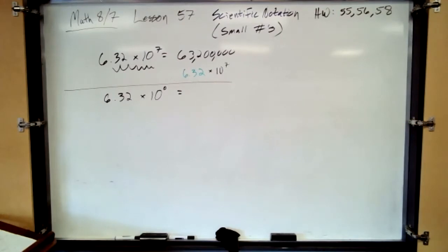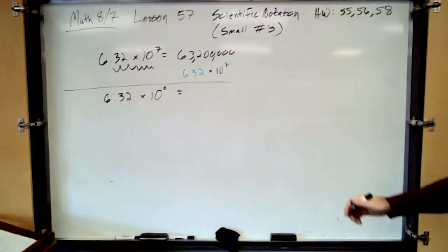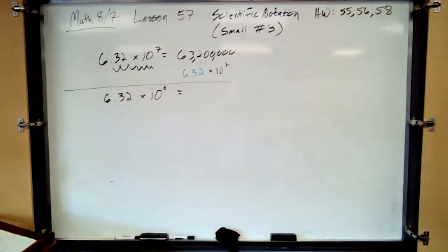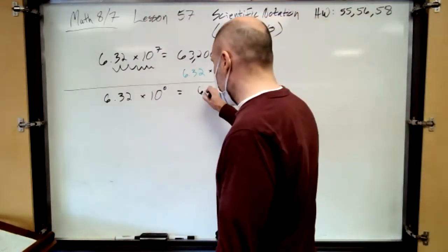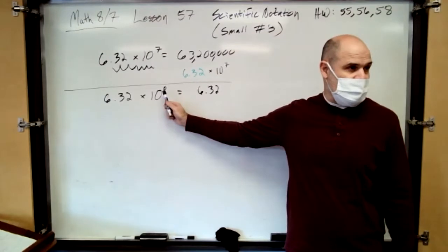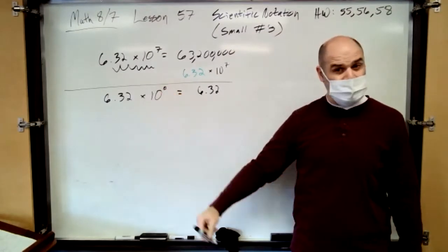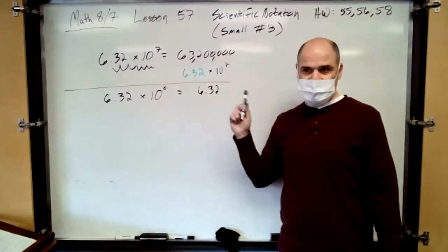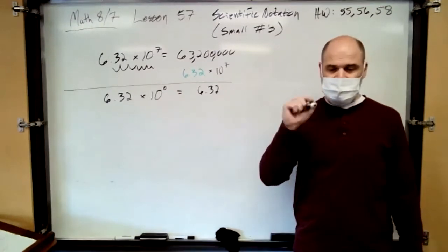630. Nope. So, that would be 632 would be 6.32 times 10 to the second, because you're moving it over two places. What is it? You don't move the number at all. Yeah. It's just 6.32. You move it zero places to the right. So, guess what 10 to the zero equals? What do you multiply by something to keep it the same? One.